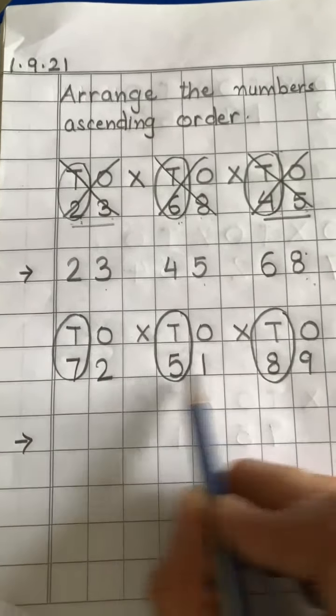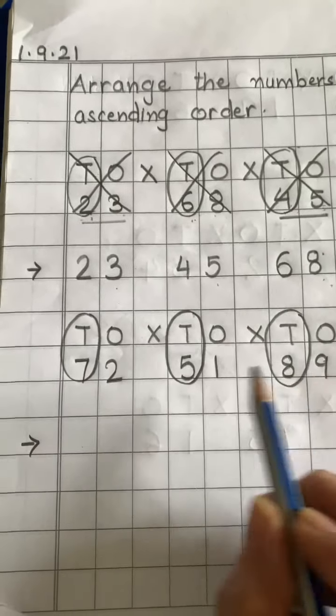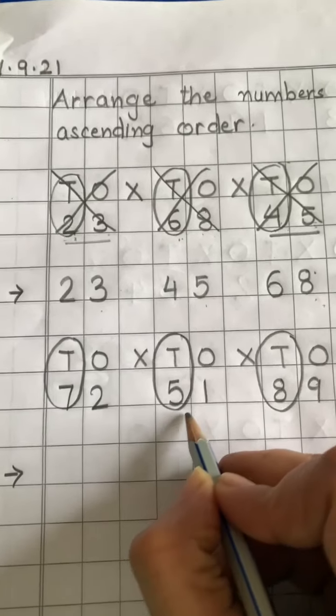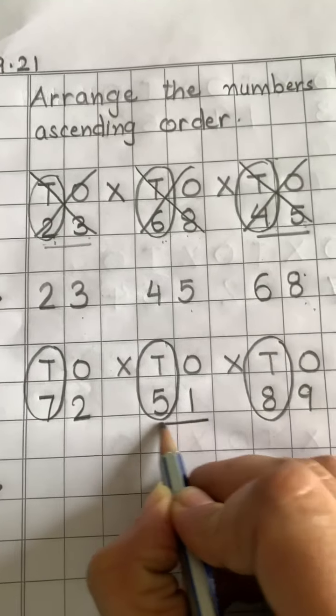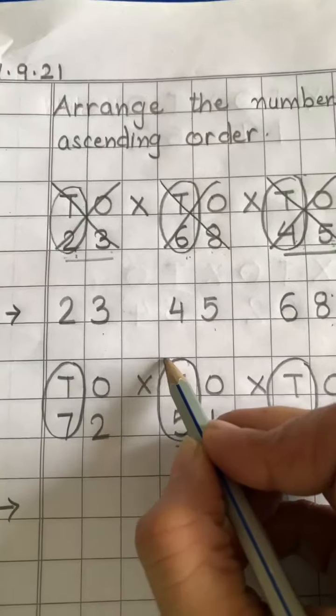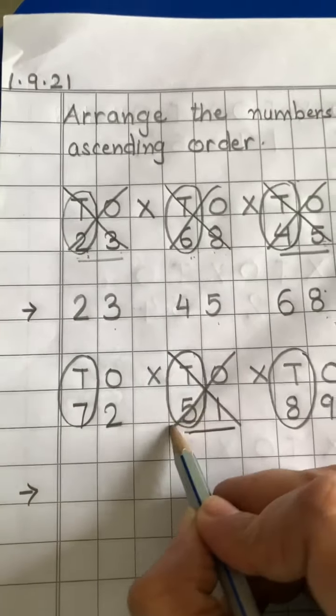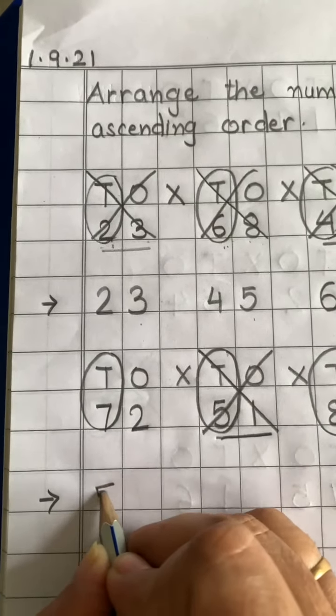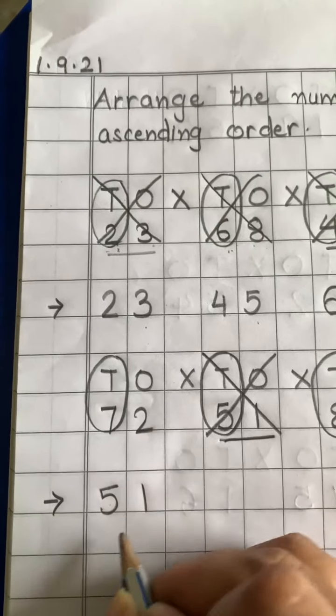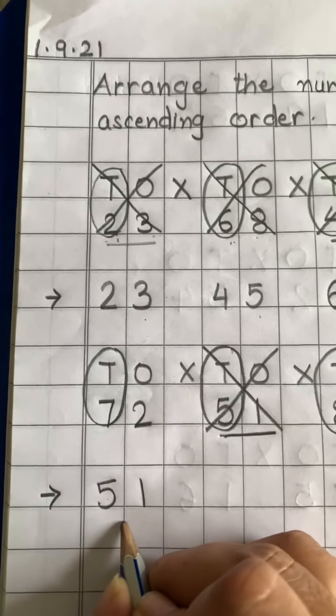Now, find which is the smallest number. Koon sabse small hai? Five. So, 51 number sabse small hai. Isko hum karengi cross. And we will write. Sabse pehle 51 likhenge. Okay, kyunki ye sabse chota hai. Isko pehle yaha pehle likhenge. Okay?